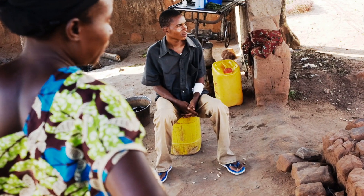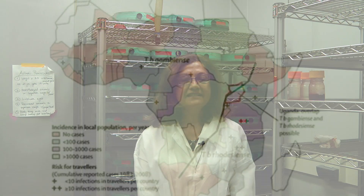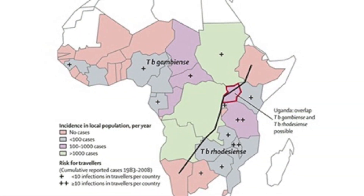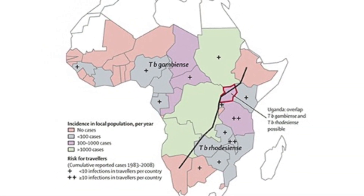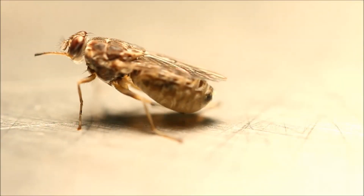Tsetse flies inhabit Sub-Saharan Africa where they cause diseases because they transmit parasitic trypanosomes — African trypanosomes. These diseases cause devastating impact for public health as well as for animals. The disease affects people who live in the poorest, hardest-to-reach areas, and the diseases have been cyclical. The last epidemic, which ended in 2010, we think caused at least half a million deaths in Sub-Saharan Africa.